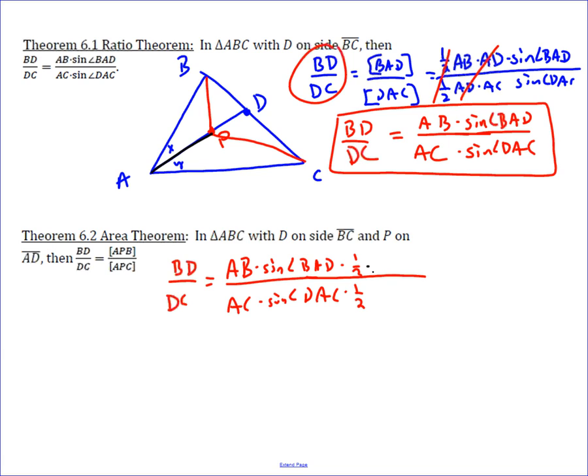and realize that if I add a one-half and add AP to both of these, which is okay to do because if I multiply by one-half AP to the numerator and the denominator, I get one-half AP, AB sine of BAD,